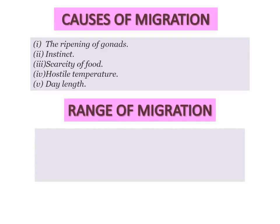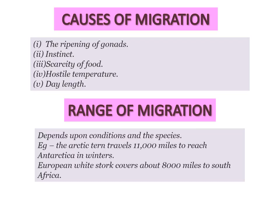Causes of migration include the ripening of gonads, instinct, scarcity of food, hostile temperature, and change in day length. The range of migration depends upon conditions and the species. For example, the Arctic tern travels 11,000 miles to reach Antarctica in winter. The European white stork covers about 8,000 miles to South Africa. Arctic terns are the longest travelers.